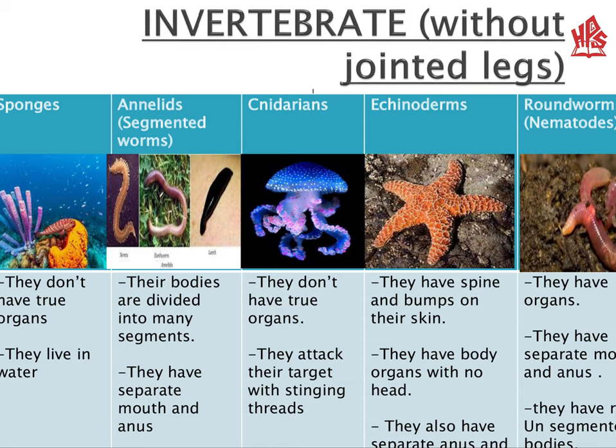Now we look at invertebrates without joined legs. There are some invertebrates which don't have joined legs: number one mollusks, number two sponges, number three annelids, number four cnidarians, number five echinoderms, number six roundworms, and number seven flatworms. From this chart you can learn about the characteristics of each invertebrate.